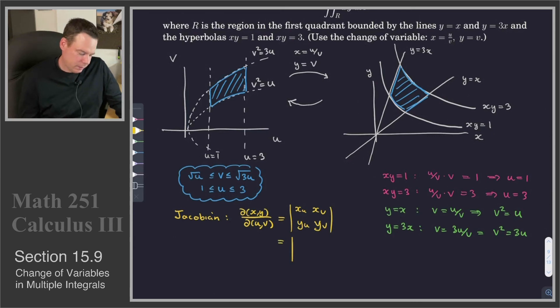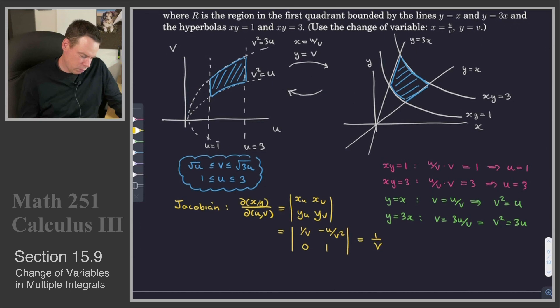In this case, xu is 1 over v. And x sub v is negative u over v squared. y sub u is 0, y sub v is 1. And so, this has a value of 1 over v. So, there's our Jacobian.